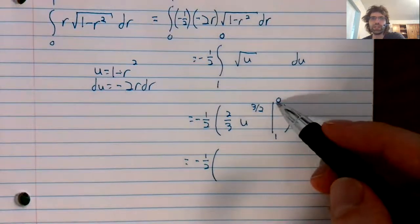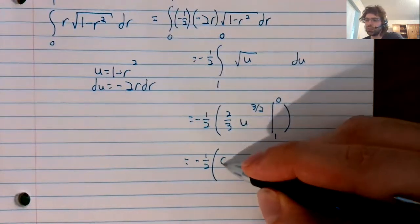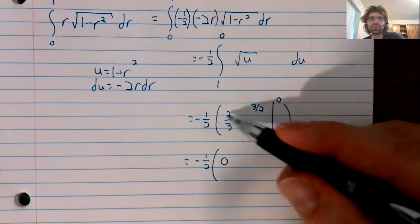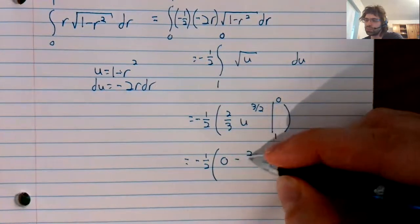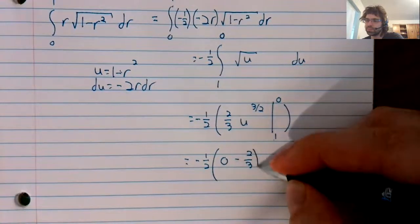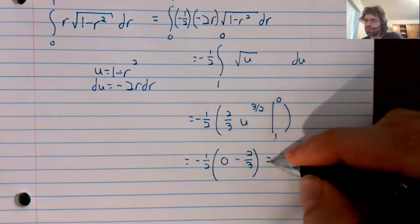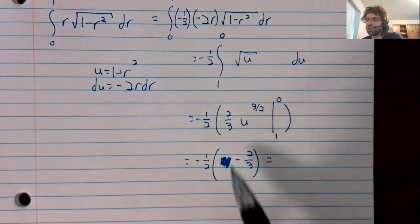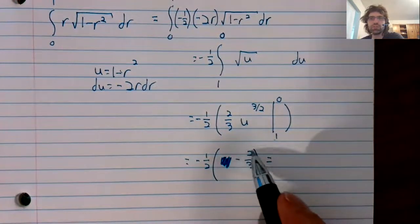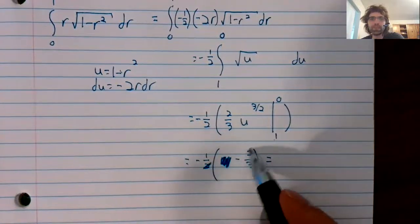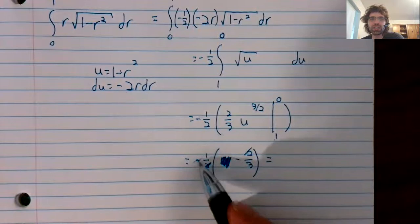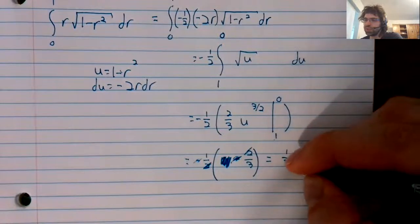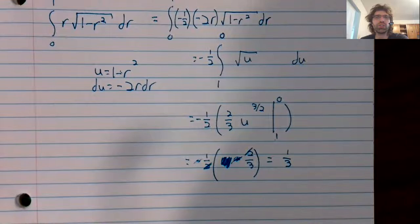And we plug in one and zero. Plug zero in here, we get zero. Plug one in here, we get one. I mean, together with this two thirds. And then make that. I mean, this zero isn't doing anything. This two and this two should cancel. This negative sign and this negative sign should cancel. I make that positive one third.